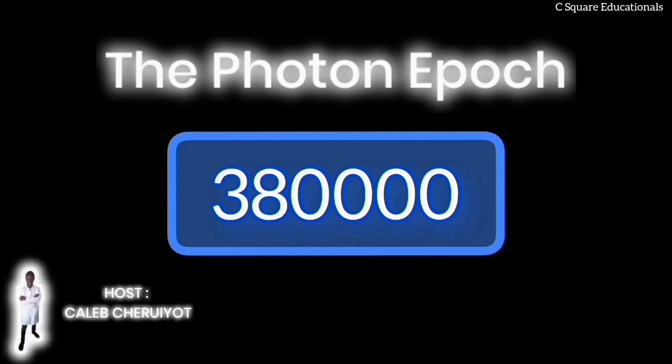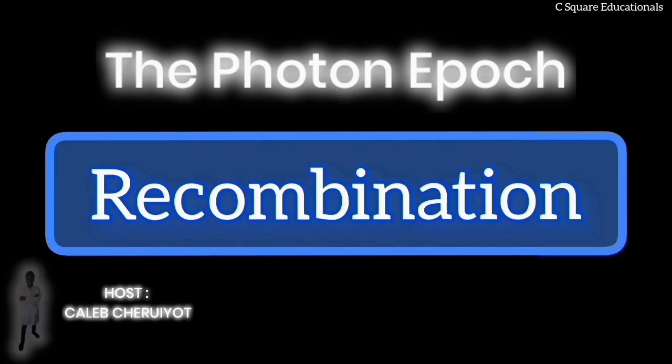This photon epoch lasts for about 380,000 years until the universe cools down to 3000 Kelvin. At this point, electrons possess significantly reduced energy, allowing the electromagnetic force to permanently bind them to nuclei, leading to the formation of stable neutral atoms in a process called recombination. As a consequence, photons are no longer confined amidst the chaos of positive nuclei and negative electrons. They are now free to traverse the universe. Even if an observer was present in space then, she would be able to observe this light.